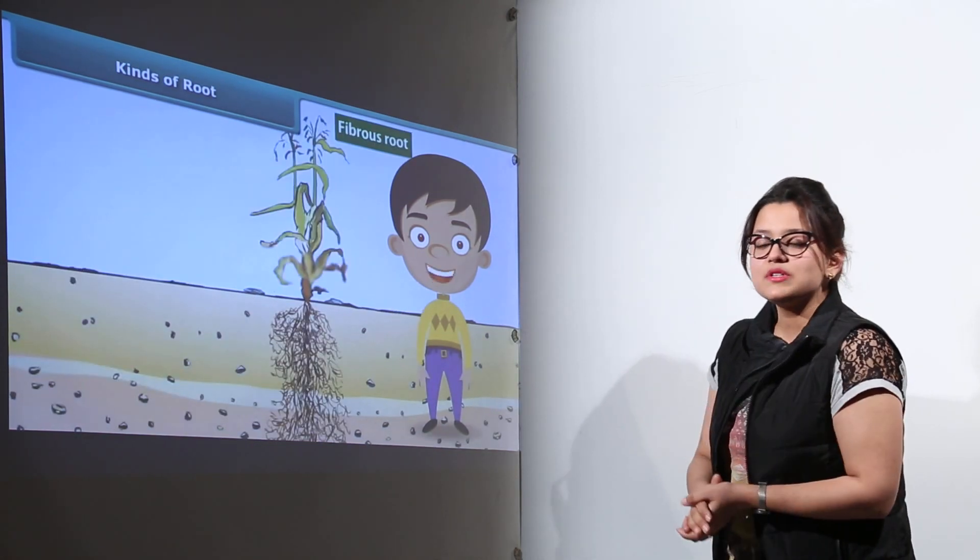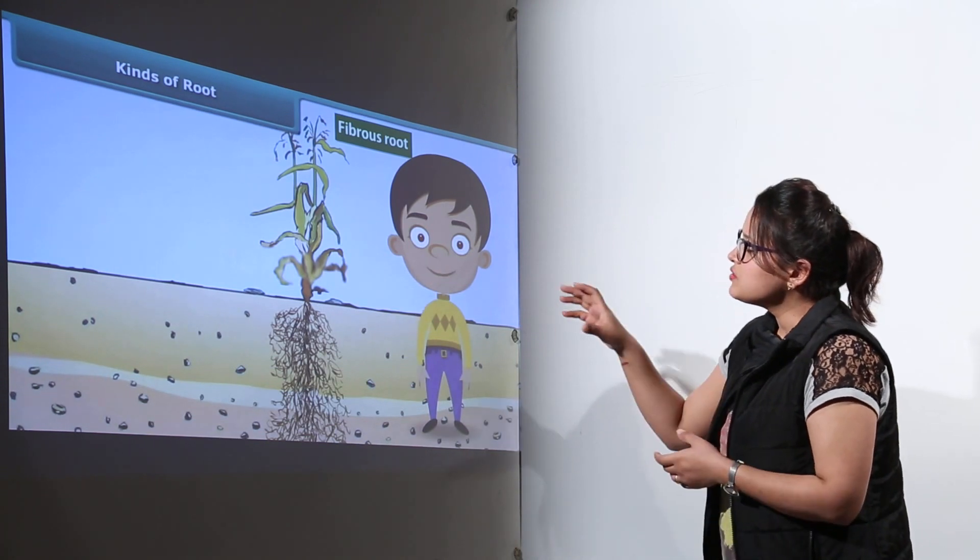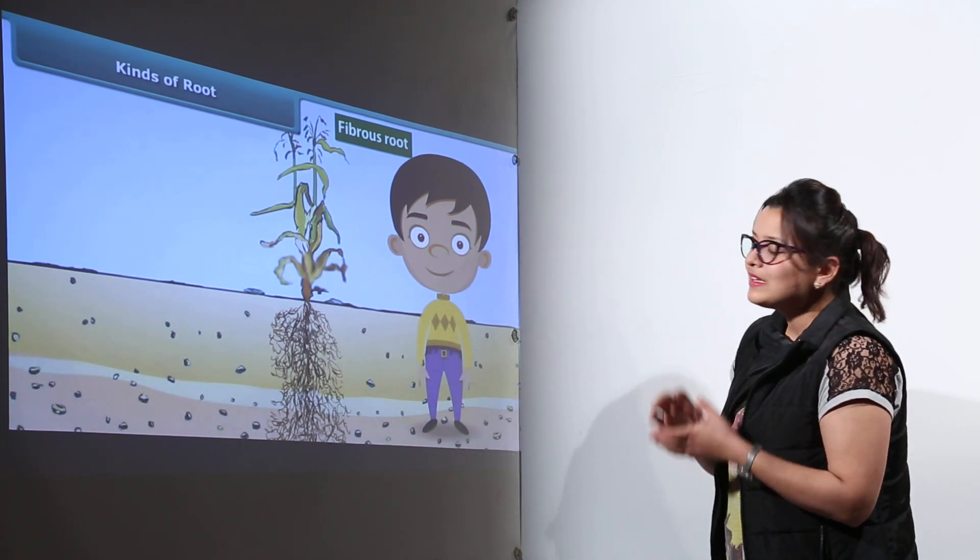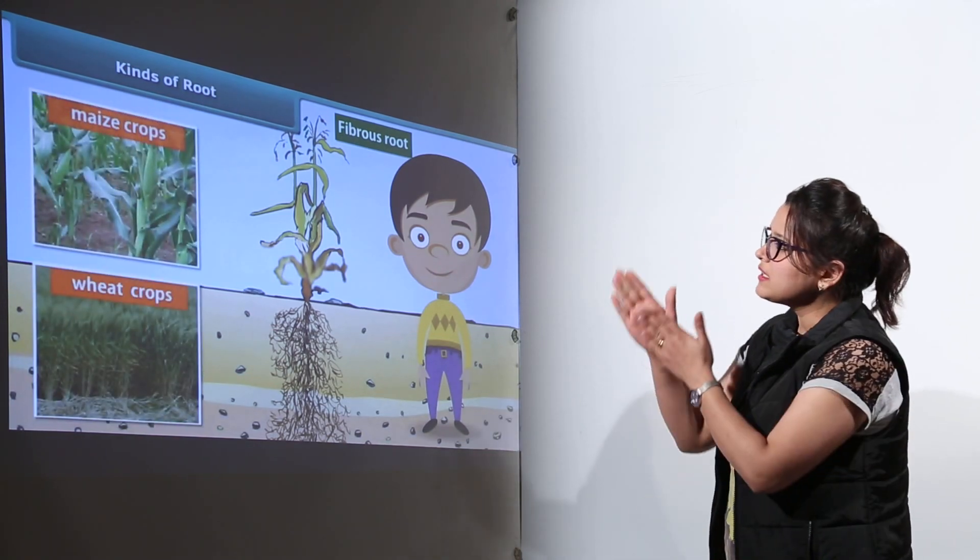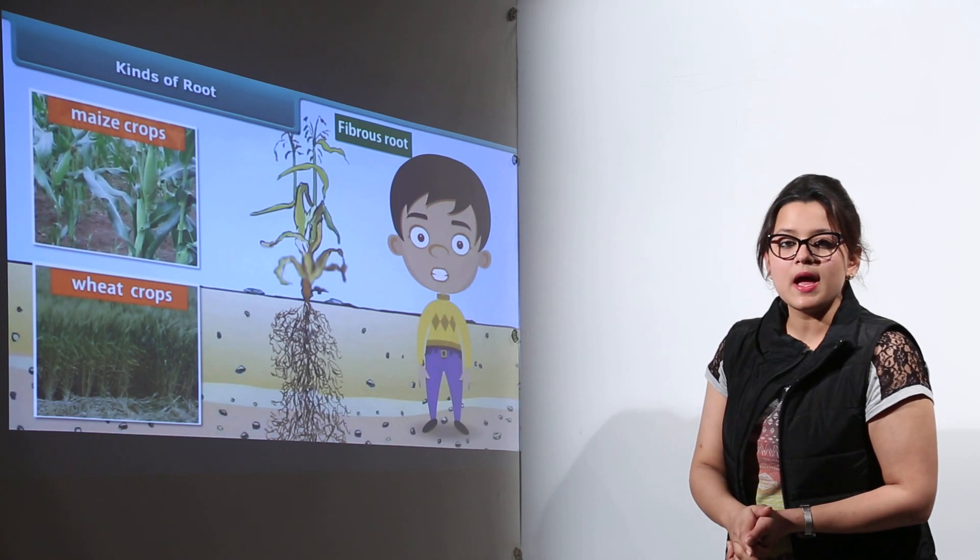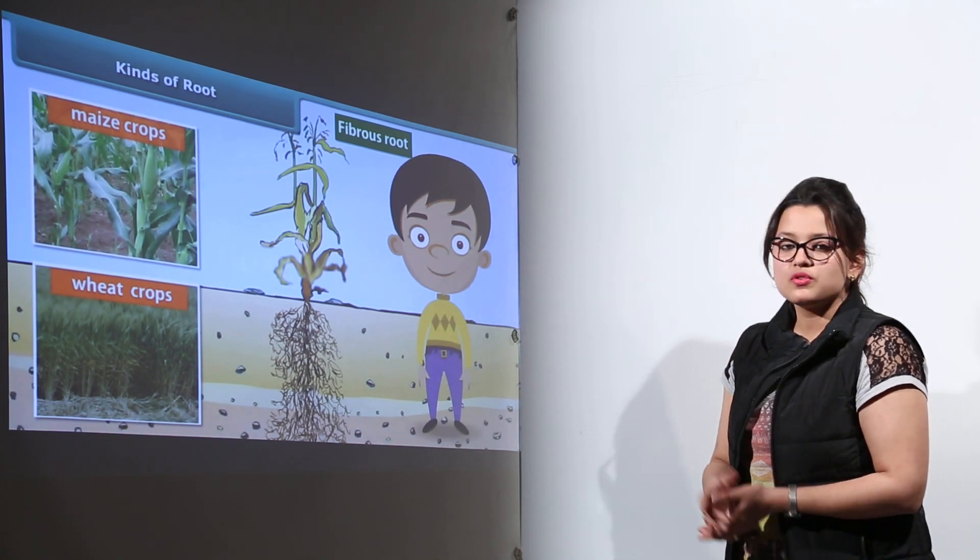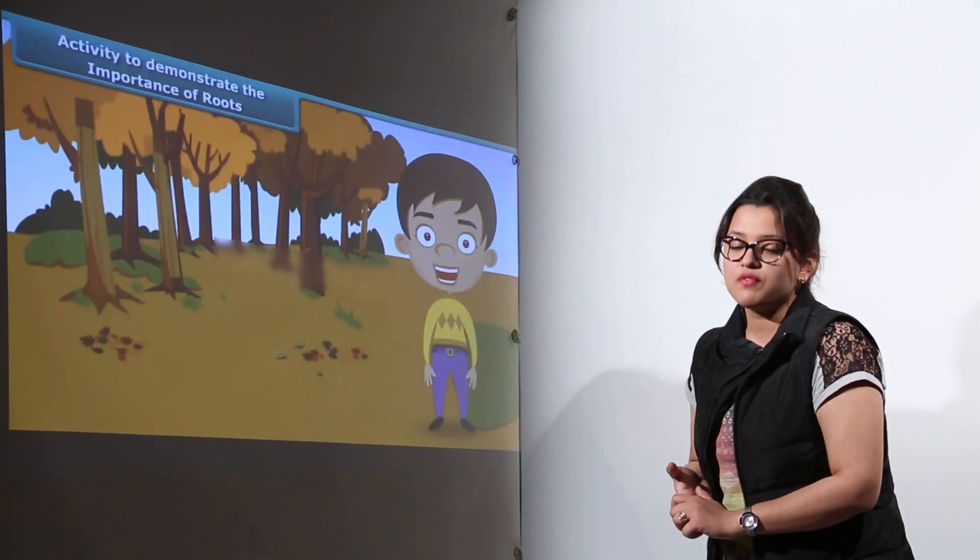Next we have fibrous roots. Fibrous roots are clusters of small roots with no long root present. Examples are wheat and maize crops.